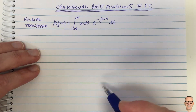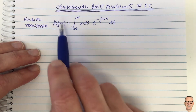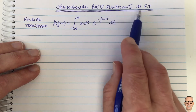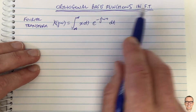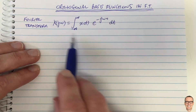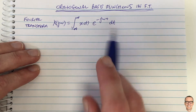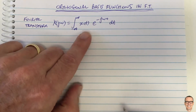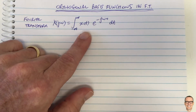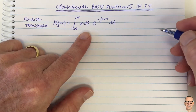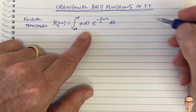Let's see what it means when we say that the basis functions in the Fourier transform are orthogonal. Here's the Fourier transform equation, and I like to think of this in relation to an equivalent sort of vector scenario.